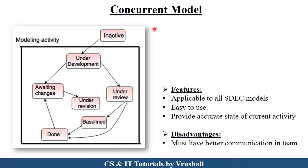The next one is the concurrent model. The concurrent model basically shows the states of each and every activity. First is the inactive state — no activity has started. Under development means first collect the requirement, then design the product, then develop the product; all these phases go under development. If the customer wants any changes, this is the awaiting changes state, and all necessary changes are done as per the customer requirement in the under revision state. If there are no customer changes, the under development state goes directly to the under review state — that is the testing phase. In baseline, it checks whether the product is as per the SRS documents, and if so the project is done. After deploying the project in the done state, if the customer wants any changes it again goes to the awaiting changes state. Basically this concurrent model is used in all software development lifecycle models — it just shows the states of each and every activity.